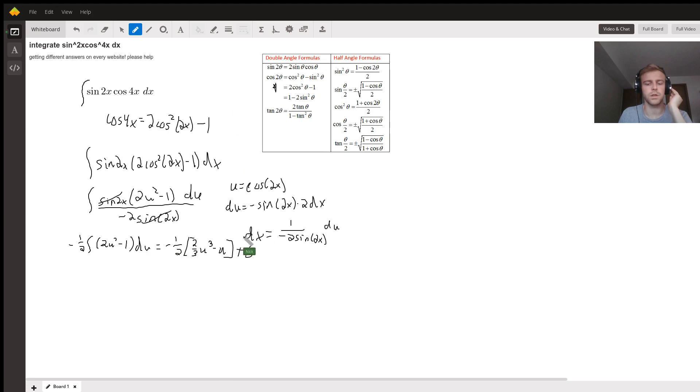Now this might look slightly different than other versions. You could distribute the negative 1/2, in which case these fractions would change. I believe it'd be a negative (1/3)u³ plus (1/2)u. With the cos(2x), you can rewrite cos(2x) different ways in terms of different trig functions. So there is a chance that the different answers you're seeing on different websites are a result of the trig functions being rewritten different ways. This is one particular answer that will work.